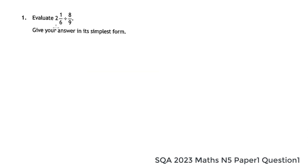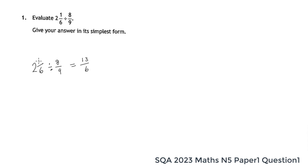Here's question one — it's a division of fractions. We have two and one sixth and we have to divide that by eight ninths. Our first step is to change this into a top heavy fraction. Each one of the two would be six sixths, so this contributes twelve sixths plus another one sixth, giving us thirteen sixths. Usually you go six times two is twelve plus the one gives you thirteen. So thirteen sixths divided by eight ninths. I'm going to show you two different ways of doing this.